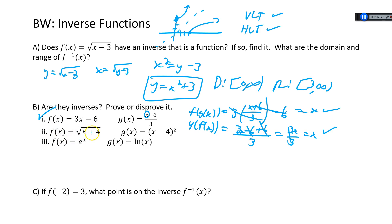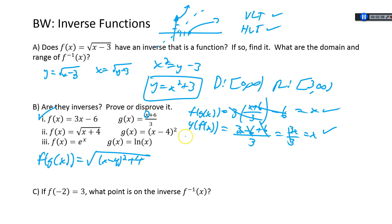Let's take a look at number two. We've got root (x plus 4) and (x minus 4) squared — they kind of look like they might be inverse functions because we have addition and subtraction, root and square. Let's do f(g(x)): that would be the square root of (x minus 4) squared plus 4. That looks problematic right away because x minus 4 is in parentheses, squared, then we add 4. This is not going to give me just x — it would have x squared minus 8x plus 16 and then plus 4 under the root. That is not x. So number two is definitely not inverse functions.